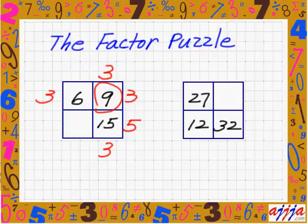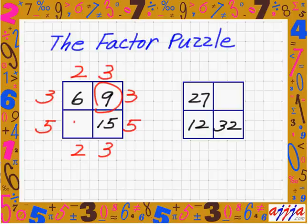What about 5? 5 right there. So now, 3 times what is 6? That's right, 2. See? 2 times 3 is 6. I feel everything right here. So I have 2 right here. That means this one must be 2. So now, 2 times 5, which is 10.